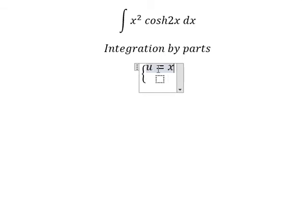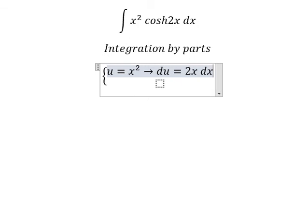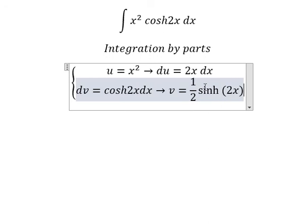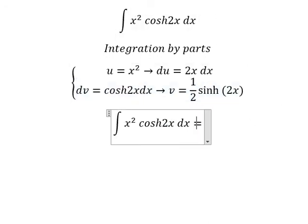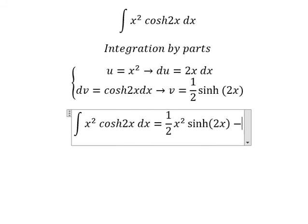If I do the first derivative for both sides, you got du equals to 2x dx. And dv, we have cosh(2x)dx. The integral of this one, we have v equal to 1/2 sinh(2x). So we have u multiplied by v minus the integral of v multiplied by du.